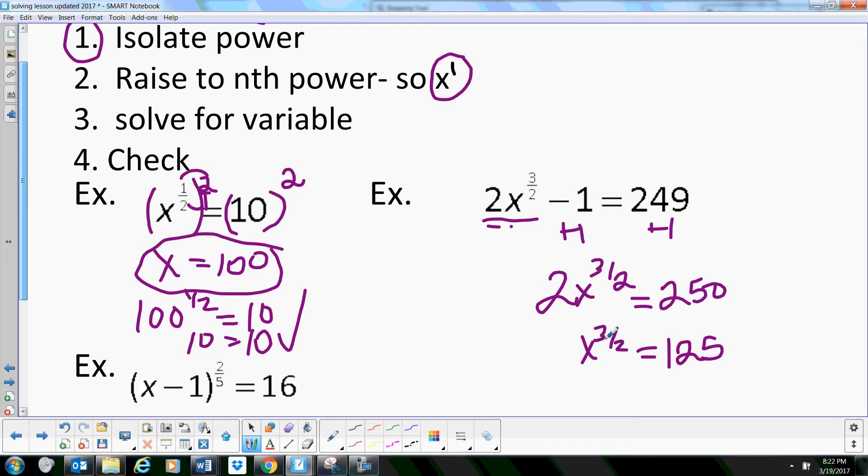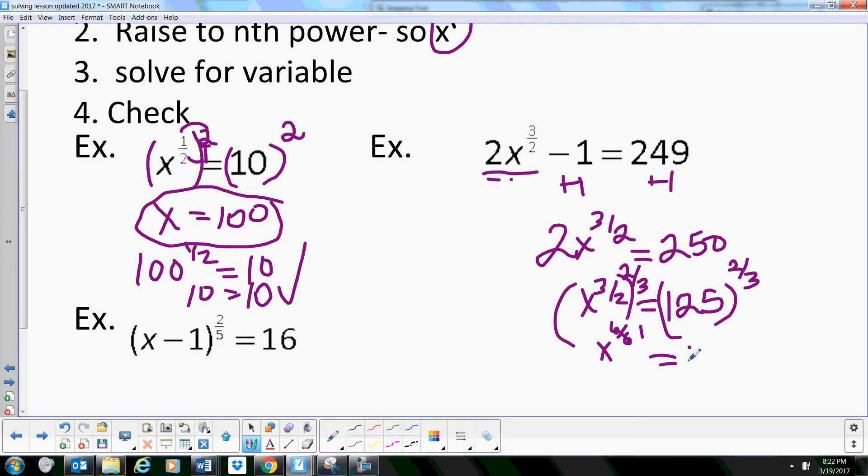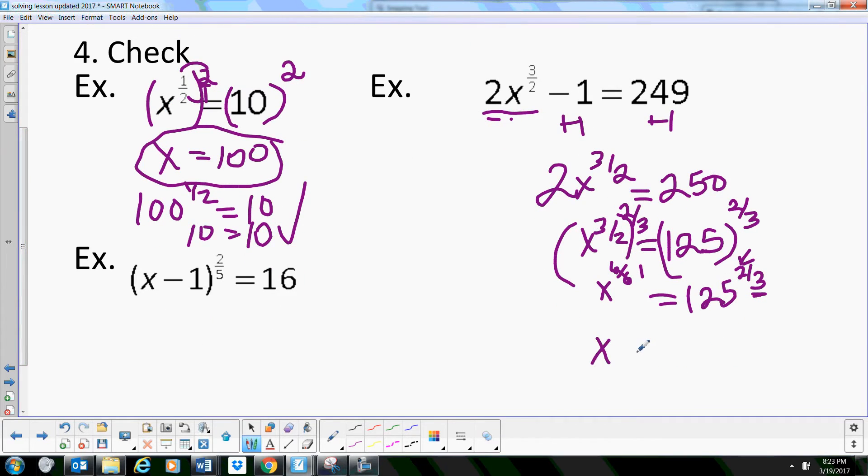Now, this time, we've got to raise both sides to what power. Well, in order to get x to the first power, I need to raise this to the two-thirds power. So this becomes x to the first. And then the right side, I get 125 to the two-thirds. Well, let's think about what the two-thirds power means. That means I'm taking the cube root and then I'm squaring it. So if we need to, we can rewrite it as a radical.